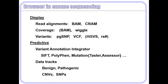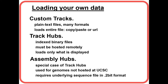On the predictive side, the variant annotation integrator will output SIFT, Polyphen, Mutation Taster, Mutation Assessor and a few other variant predictors. We also have the data tracks in the four quadrants of the grid shown earlier. To load your own data, we will work with custom tracks today, showing how to load simple text files in many available formats. Custom tracks load the entire file — you can either copy-paste the data or use a URL to the data.